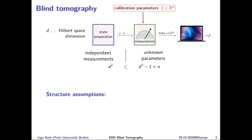A clarifying discussion follows: the d² measurement outputs correspond to expectation values of observables — for example, measuring in an orthogonal basis gives d² independent outputs, while the unknowns are d² state parameters plus N calibration parameters. To get around this, we'll use structure assumptions. First, a low-rank assumption: experimentalists may have near-pure states, and d² reduces to roughly 2Rd. Second, a sparse calibration vector: if only a few calibration parameters are active, this gives R·D + S·log(N) degrees of freedom.